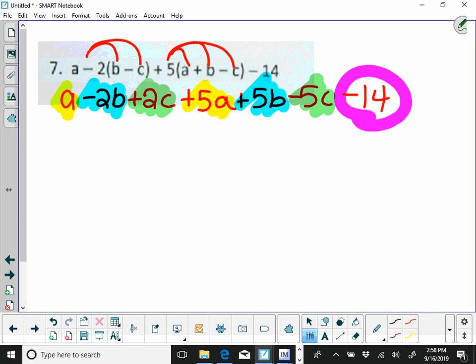So combine. a plus 5a is 6a, negative 2b plus 5b is 3b, and 2c minus 5c is negative 3c minus 14.